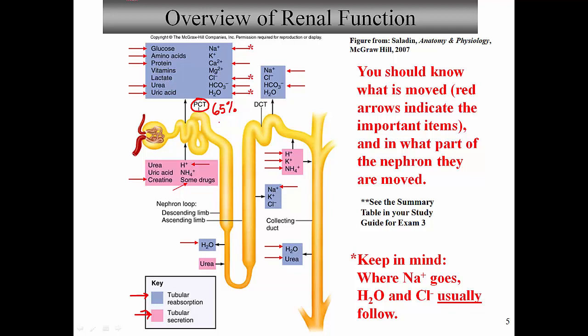Looking at items reabsorbed in the PCT, you can see things like glucose, amino acids, and proteins — obviously very valuable things we wouldn't want to lose in the urine. We also have substances like lactate, or lactic acid, which can be converted back into glucose. Urea and uric acid are also present, and we'll talk about their processing later. On the other side of this box, important ions are also reabsorbed: sodium, potassium, calcium, magnesium, chloride, bicarbonate, and water.